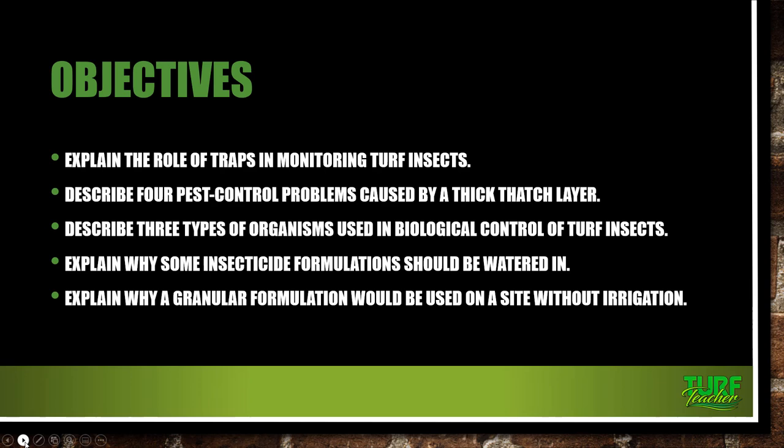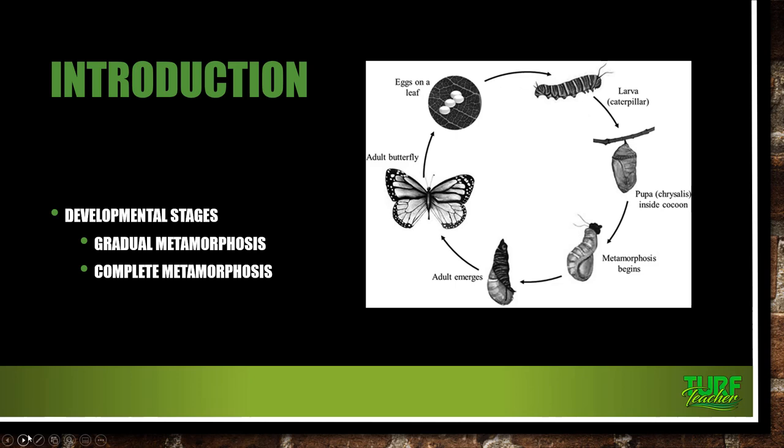There are many insects that affect turf grasses, but most of the damage is only caused by a certain few. We're going to look at those as we go through the lecture. Each one of these insects will go through developmental stages. We have gradual metamorphosis and we have complete metamorphosis.